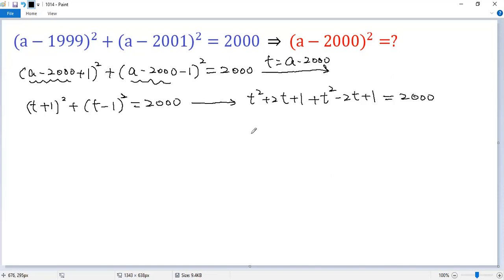Now we collect like terms, t squared plus t squared. So we get 2t squared, 2t minus 2t cancel. 1 plus 1 equals 2.